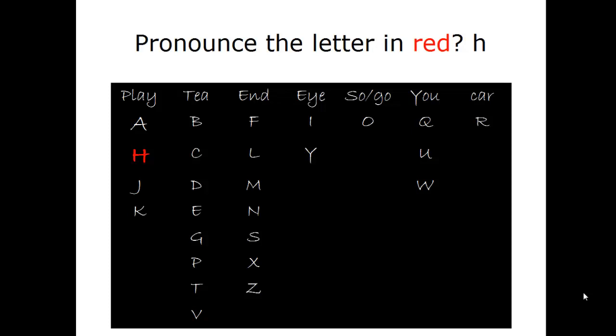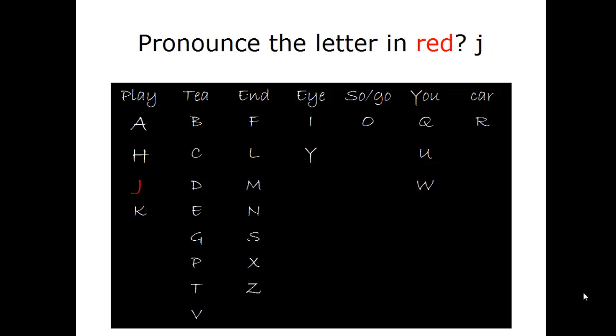So you have to pronounce the letter in red. All right? So the letter is H. Get it right? Now, this one in red. W. Good. This one. This one is J.